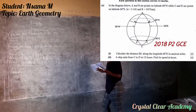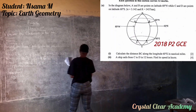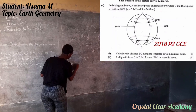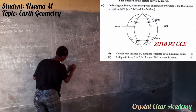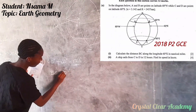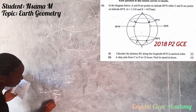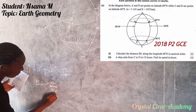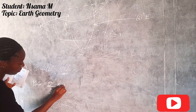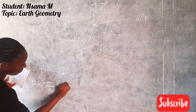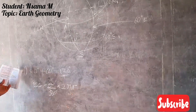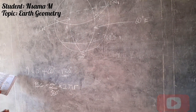We are going to write our formula, which is BC equals 50 over 360, times 2πR. This is our formula.